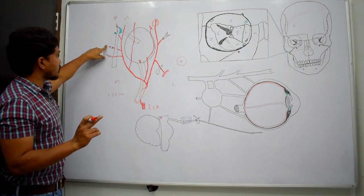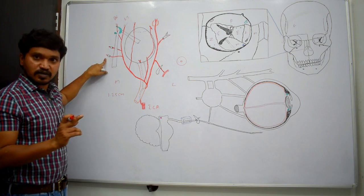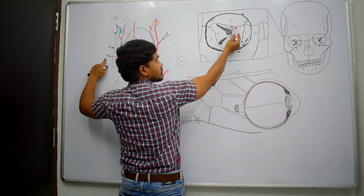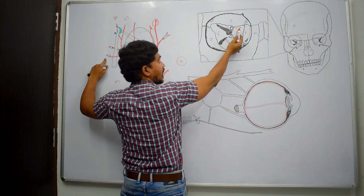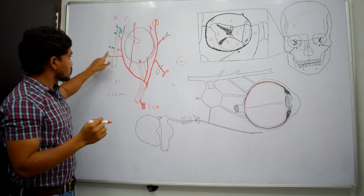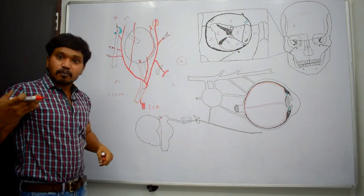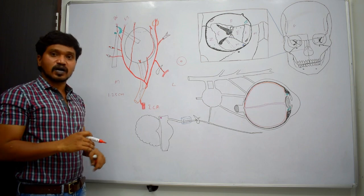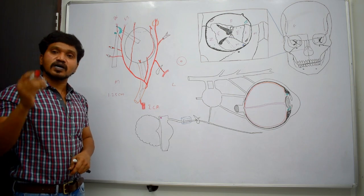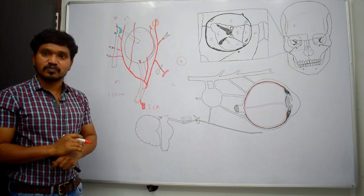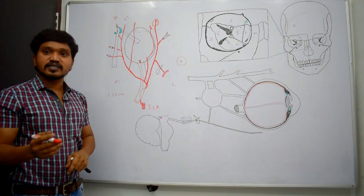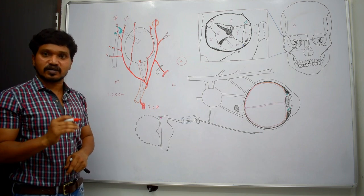There is also the anterior ethmoidal artery and the posterior ethmoidal artery — both branches from the main trunk of the ophthalmic artery. In the medial wall, the anterior and posterior ethmoidal foramina are present. Through these foramina, they pass and supply the ethmoidal air sinuses and the nasal cavity.